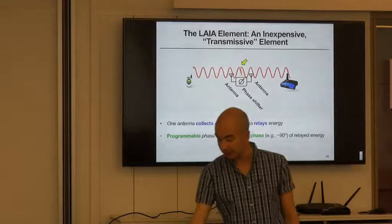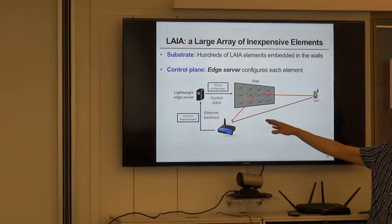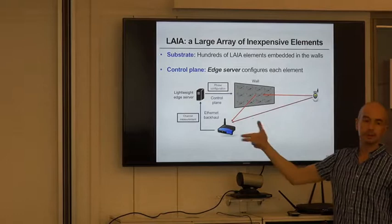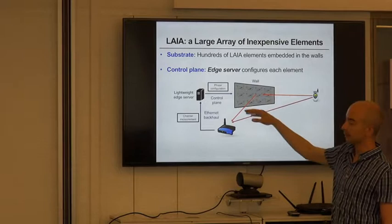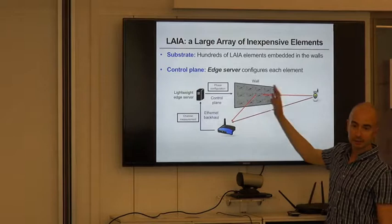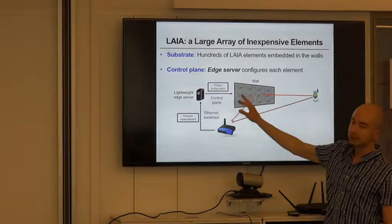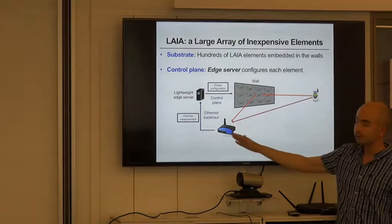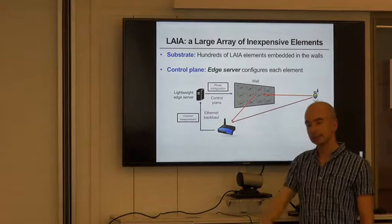The idea is to stick one of these elements in a wall between two rooms. We're calling this a transmissive element because it's modifying the signal that gets transmitted through the wall between two rooms. Then we replicate that at a large scale with many elements in a wall. At that point, we have the endpoints and then we need to build something to control the LAIA array. That's going to be some kind of lightweight edge server. It sits here nearby and it's going to be wired up to each one of these elements or controlling each of these elements wirelessly on a different radio channel. Then it's going to be looking at this conversation and trying to adapt the configuration of these elements accordingly.